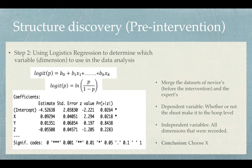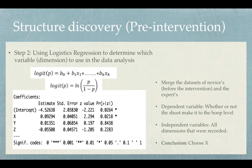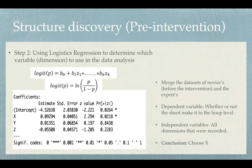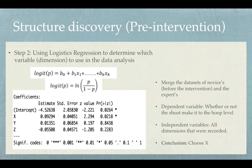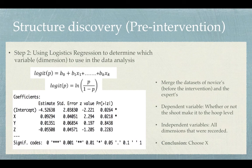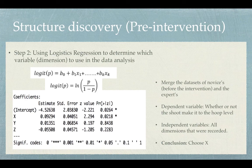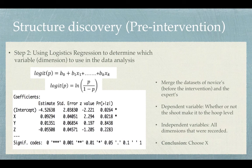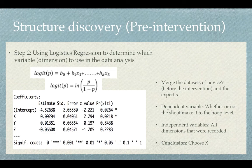For the second step of structure discovery, we use logistic regression to determine which dimension or which variables to use in our data analysis. First, we merge the data sets of the novice before the intervention and the expert's data set. Our dependent variable here is whether or not the shot makes it to the hoop level. Our independent variables are all the dimensions that were recorded: x, y, and z of the acceleration. As you can see in our regression results, the acceleration on the x-axis turns out to have the most statistically significant impact on the probability of getting the ball to the hoop level, with the p-value less than 0.05.